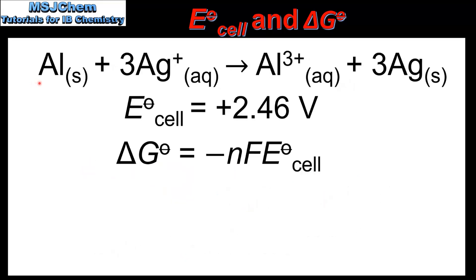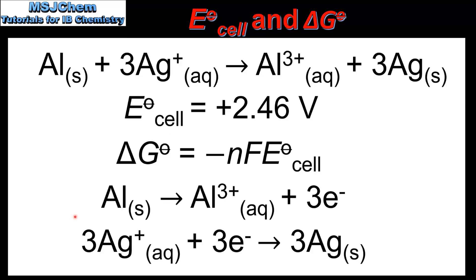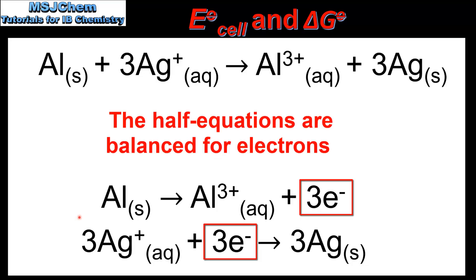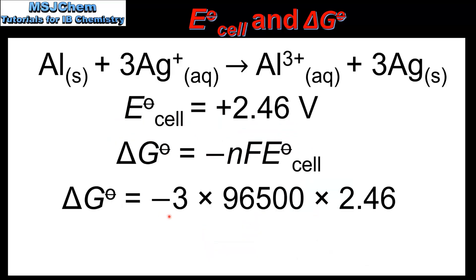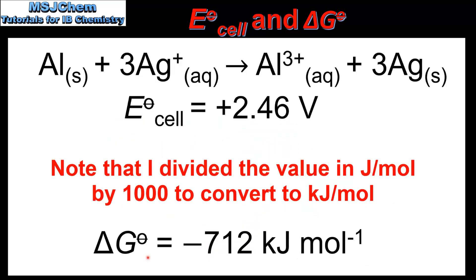In our next example we'll calculate the delta G for this reaction. The cell potential for the reaction is positive 2.46 volts. To determine the value of N we look at the two half equations, and as we can see there are 3 moles of electrons transferred in the reaction. We then input the values into the equation, which when rounded to 3 significant figures is negative 712 kilojoules per mole.